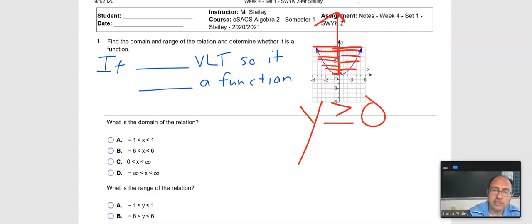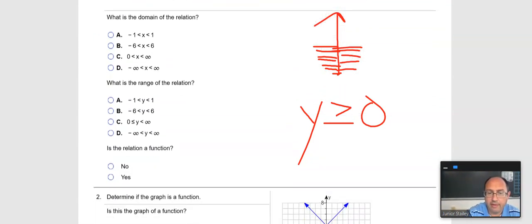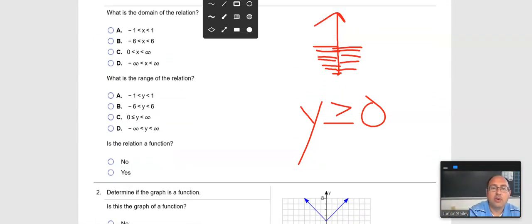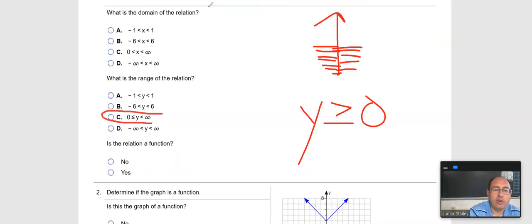Starting at zero and then going up, up, up, up, up. Now, which one of my choices is that one? Well, if I take a look at this over here, I'm going to see that letter C is the one that we're talking about because it says everything bigger than zero and it keeps going up to infinity. So that's the one. You're looking for, sorry for yawning. Okay, is the relation a function? We already determined that yes, it was.